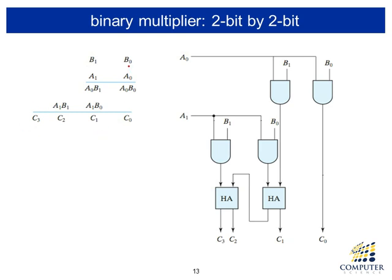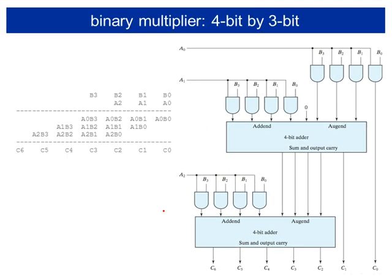For binary numbers, since we only deal with 0 and 1, multiplication of individual bits is simply achieved with an AND gate. For two 2-bit numbers A and B, we use AND gates to calculate each partial product, then add them column-wise with an adder. Similarly, for a 4-bit by 3-bit multiplier, AND gates produce the partial products and adders combine them column-wise to construct the multiplier circuit.